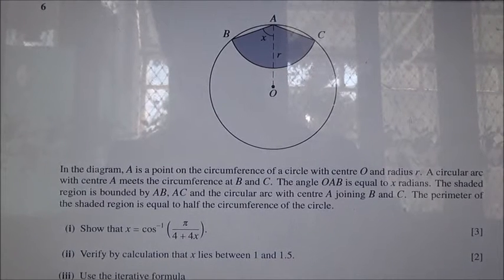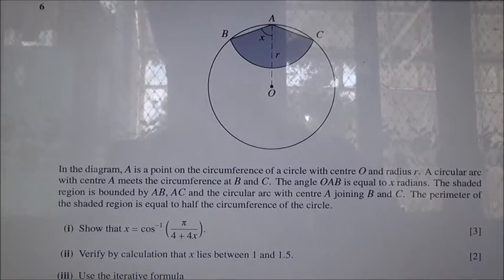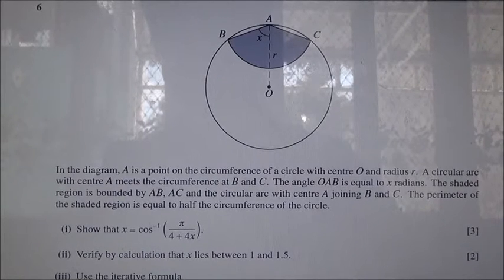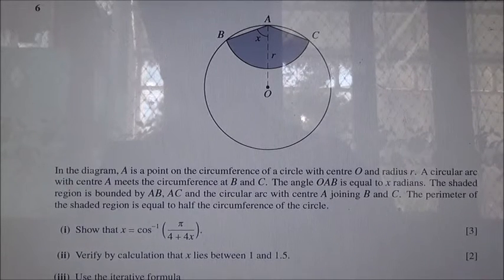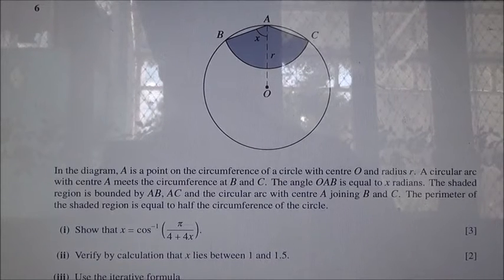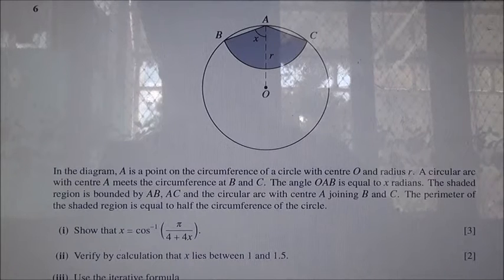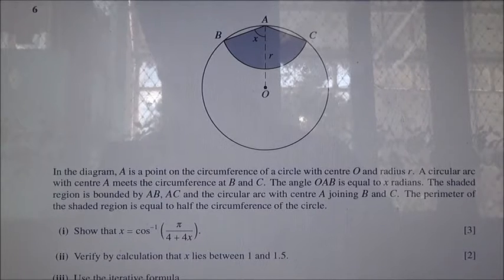This is question number 6 taken from June 2014 Advanced Level Maths, HSE P3. In the diagram, A is a point on the circumference of a circle with center O and radius R. A circular arc with center A meets the circumference at B and C. The angle OAB is equal to X radians. The shaded region is bounded by AB, AC, and the circular arc with center A joining B and C. The perimeter of the shaded region is equal to half the circumference of the circle.